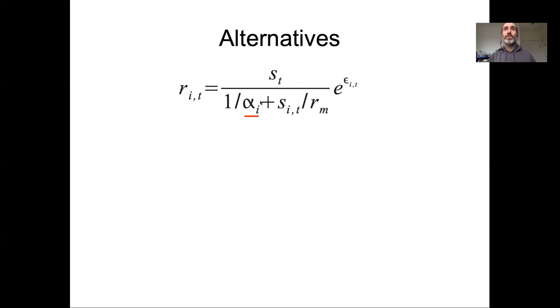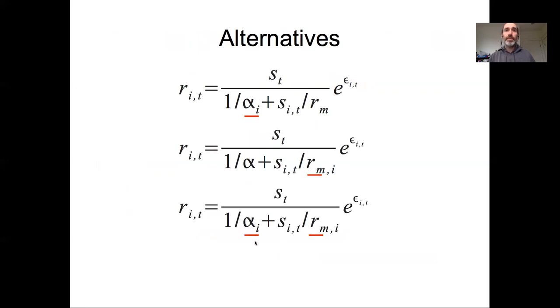There are a few alternatives for how we might do that. One option would be to put the random effect on the alpha. Another would be to put it on this RM parameter. The third option would be put it on the alpha and the RM. Another option would be just to add it as an additive random effect on the error the same as we were doing with our linear models. Or we could combine any of that additive random effect with any of these other random effects.